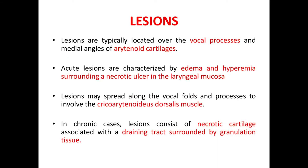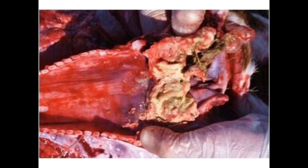Lesions are typically located over the vocal processes and medial angles of the arytenoid cartilage. Acute lesions are characterized by edema and hyperemia surrounding a necrotic ulcer in the laryngeal mucosa. Lesions may spread along the vocal cords and processes to involve the cricoarytenoideus dorsalis muscle. In chronic cases, the lesions consist of necrotic cartilage associated with a draining tract surrounded by granulation tissue.